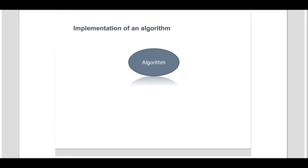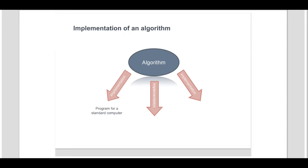There are typically many different possible computer implementations of an algorithm. Since it is an algorithm which defines the concept underlying an invention, the scope of protection sought ideally encompasses all computer implementations of an algorithm. In practice, the physical implementation of an algorithm can be performed either through a computer program running on a standard computer, potentially in combination with specific circuits, or through specific circuits alone. When an algorithm, wholly or partly implemented in a computer program, defines the underlying concept of an invention, that invention is termed a computer-implemented invention.